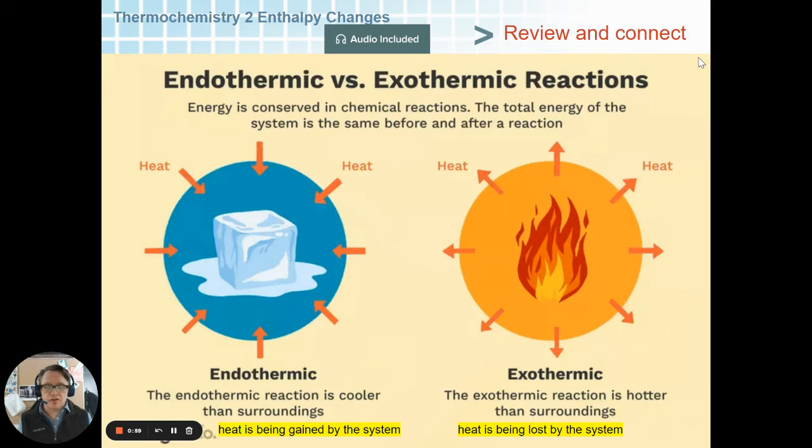Take a look at these two processes and think about whether or not these would be a positive or negative change in enthalpy. The big clue here is down at the bottom, whether or not heat is being gained or lost by the system. Take a minute and think about it and write whether it would be positive delta H or negative delta H.